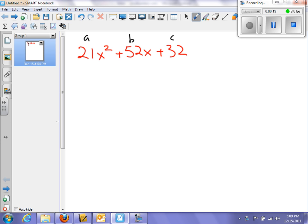And what I need to do to start this sure-fire method is I multiply my a, which is 21, times my c, which is 32. And that equals 672.